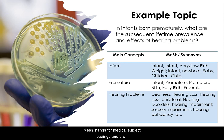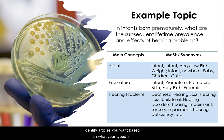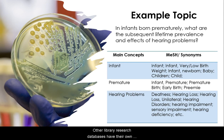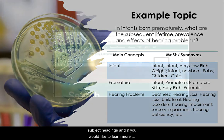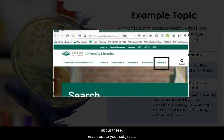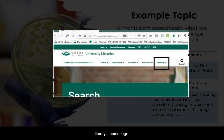MeSH stands for Medical Subject Headings and are official terms assigned to articles in the database PubMed, and they help PubMed to identify articles you want based on what you've typed in. Other library research databases have their own subject headings, and if you would like to learn more about these, reach out to your subject librarian or peruse our subject guides on the library's homepage.